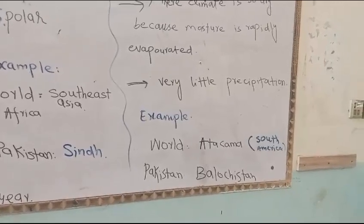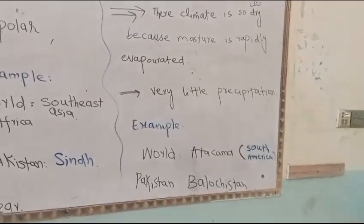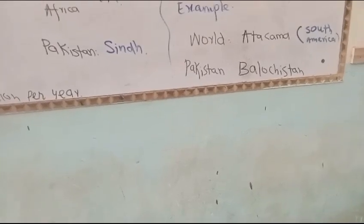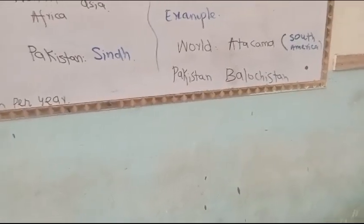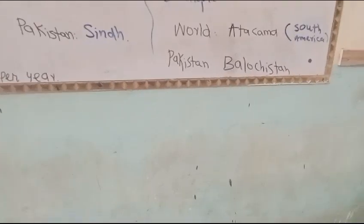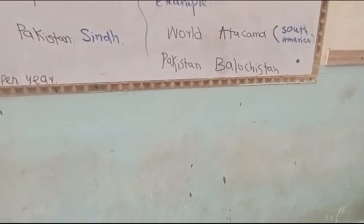The rain is very low and the wind is also very low. I have two examples — one from Pakistan and one from the world. The dry region of Pakistan is Balochistan. The climate there is very dry, and that is why there are many dry fruits produced in Pakistan.